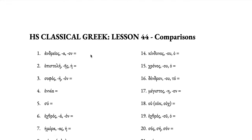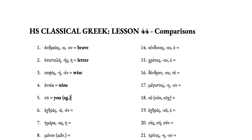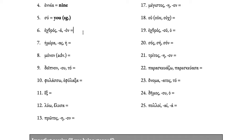Starting with the vocabulary review on the first page: andreos is brave, epistole is a letter, sophos means wise, nea means nine (the number nine), su is you singular, and ekthros/ekthra/ekthron is an adjective meaning hostile. As a noun, ho ekthros means the enemy. Hemera is a day, like ephemeral, meaning lasting only a day. Monon means only or alone as an adverb, and deipnon is dinner or meal.